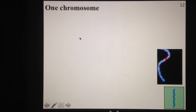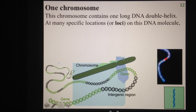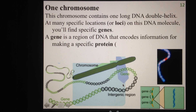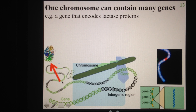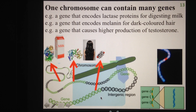A nucleus of a human cell contains 46 chromosomes. Focusing on a single chromosome: this schematic drawing of a chromosome contains one very long DNA double helix. At many specific locations, or loci, on the DNA molecule, you'll find a bunch of different genes. A gene is basically a region of DNA that includes information used to make a specific protein most of the time, or sometimes a functional RNA. For example, one gene might code for lactase — the protein needed to digest milk — another might encode melanin for hair color, and another might encode a protein that produces more testosterone.